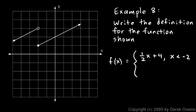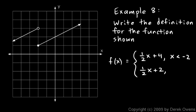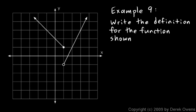If x is equal to negative two or greater, we're along the second line. You can see the y-intercept there is two, and the slope is again one-half — up one over two. So that line is one-half x plus two, and it applies when x is greater than or equal to negative two. That's the complete definition of the piecewise function: two pieces, each with its own equation and domain.